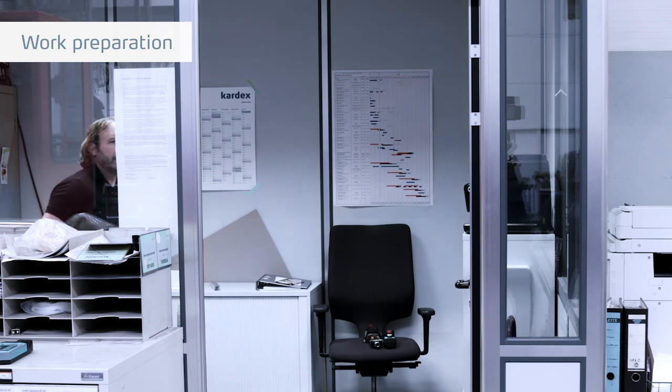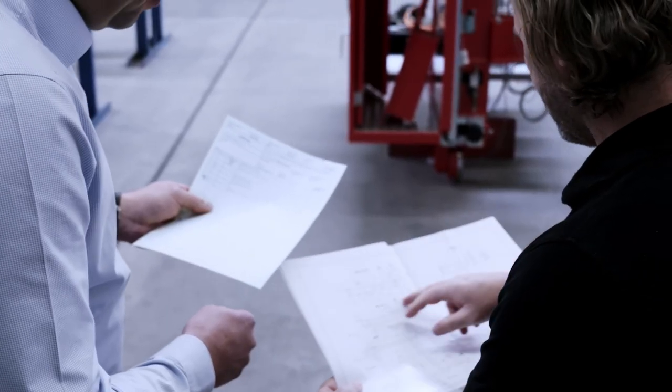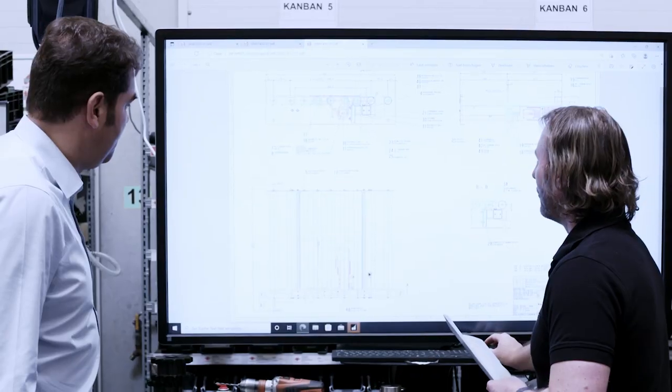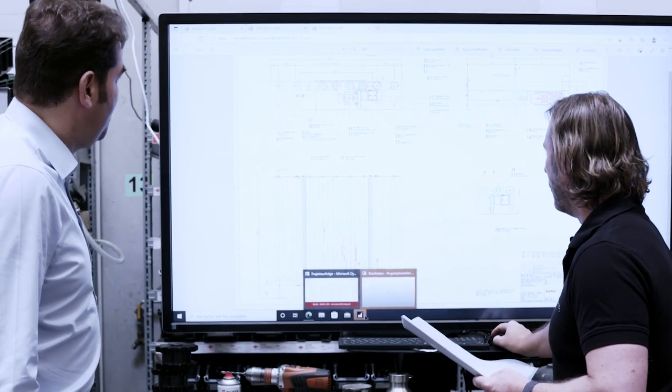Production planners work together with production management to schedule the various jobs. Finally, the individual manufacturing steps are prioritized and assigned to the appropriate production departments. This enables us to guarantee on-time delivery to our customers.